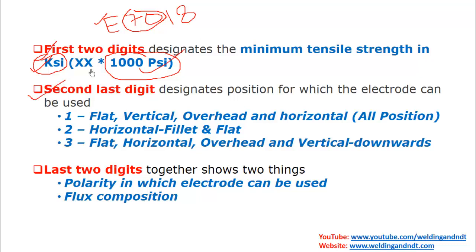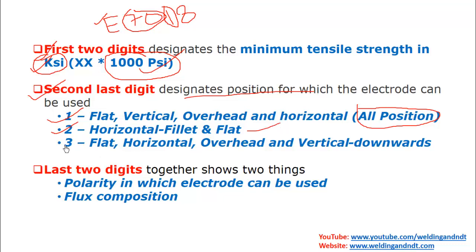The second last digit, 1, designates the welding position. Here, 1 means the electrode can be used for all positions. If the second last digit is 2, the electrode can be used in horizontal fillet or flat position. If it is 3, the electrode can be used for flat, horizontal, overhead, and vertical downward positions. The last two digits, 1 and 8 collectively, show the polarity — AC or DCEP — and the flux composition.